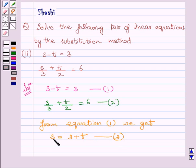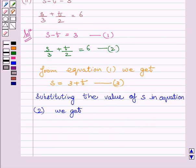We will substitute the value of s in equation number 2. Substituting the value of s from equation 3 in equation number 2 we get 3 plus t upon 3 plus t upon 2 is equal to 6.